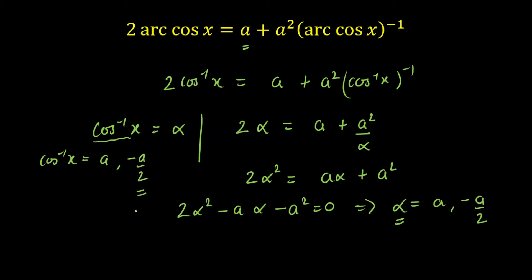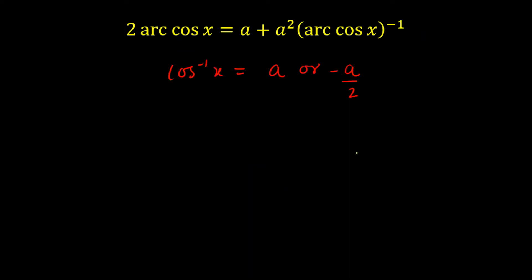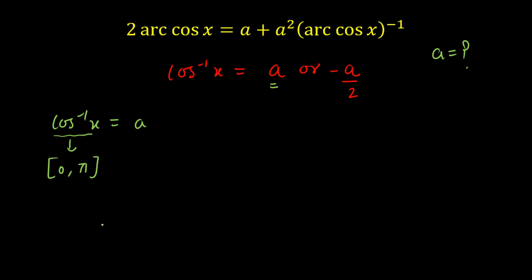In the next part I am going to calculate the value of A for which this equation will have some solutions. We got two values of cos⁻¹(x): either A or −A/2. Most of you can solve this within minutes but most will get the wrong answer. Why? Because there is a catch here.